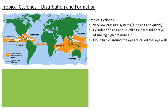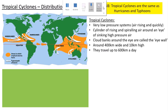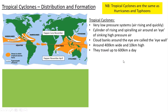The cloud banks around the eye are called the eye wall, and they can be around 400 kilometres wide and about 10 kilometres high — these are massive storm systems. Don't confuse them with tornadoes. They can travel up to about 600 kilometres a day, so they're fast moving. In the Northern Hemisphere, tropical cyclones happen when it's warmer — in our kind of warmer half of the year when the Earth is tilted towards the Sun. In the Southern Hemisphere, they're more likely to happen from November to April.